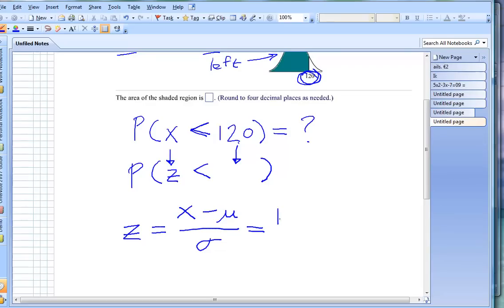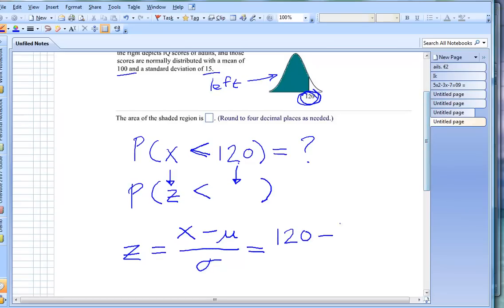Let's plug all this in here. I've got 120. That's my x value. Minus the mean. They told us the mean was 100. Put that right there. Divided by our standard deviation of 15.